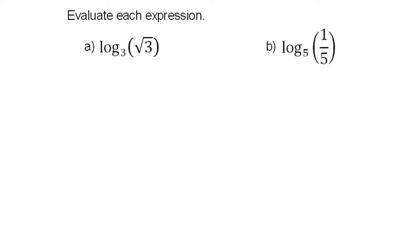Here's one: log base 3 of the square root of 3. What power do I raise 3 to in order to get the square root of 3? We know the square root of 3 equals 3 to the 1/2 power, so the answer is 1/2. Next: 5 to what power gives me 1/5? Remember, negative exponents give reciprocals, so 5 to the negative first power gives 1/5. The answer is negative 1.